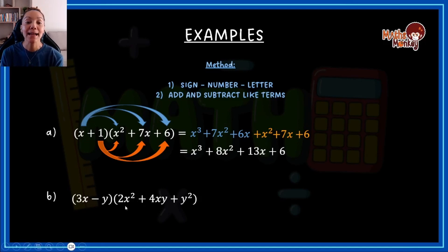3x minus y times 2x squared plus 4xy plus y squared. Again, we will take the first term, which is the 3x, and multiply it by each. Each time, each arrow represents the method sign number letter.